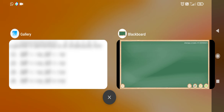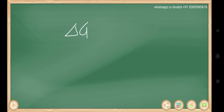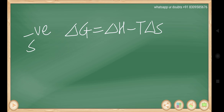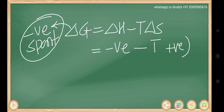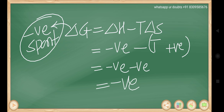The relation is Delta G equals Delta H minus T Delta S. If Delta G is negative, the process is spontaneous. When Delta H is negative and Delta S is positive, the T Delta S term is also negative when subtracted, so the overall value of Delta G will always be negative — meaning the process is spontaneous under any condition.